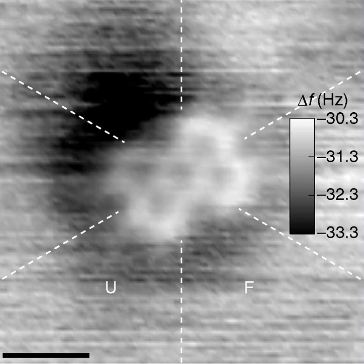A molecule may be homonuclear — that is, it consists of atoms of one chemical element, as with oxygen O2 — or it may be heteronuclear, a chemical compound composed of more than one element, as with water H2O. Atoms and complexes connected by non-covalent interactions, such as hydrogen bonds or ionic bonds, are typically not considered single molecules.